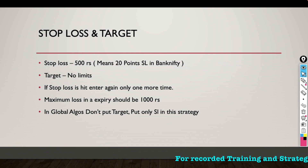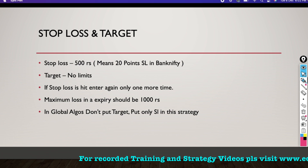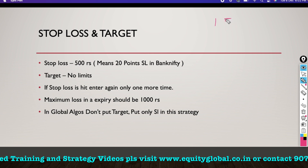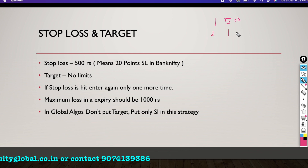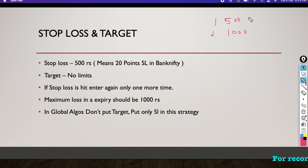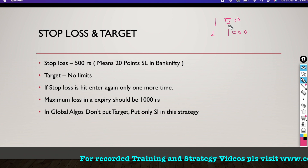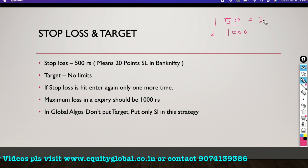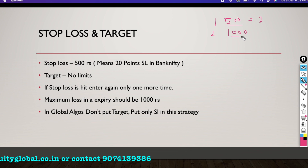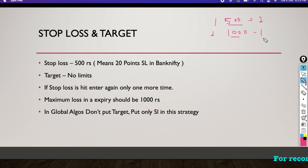There are two types of stop loss you can use. The first is a 500 rupee stop loss — with this, you can take two trades. If the first trade hits stop loss, you re-enter for a second trade. The second option is a 1000 rupee stop loss — with this, you take only one trade. Both have been backtested and show a 60-70% win rate.